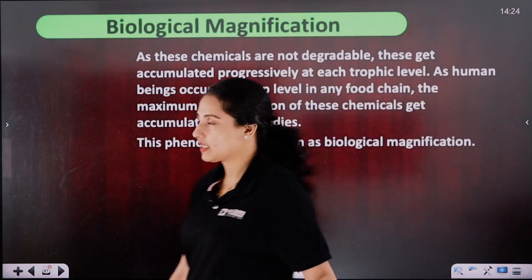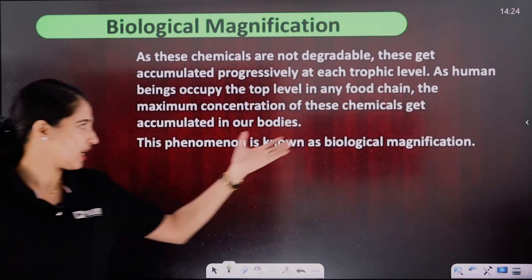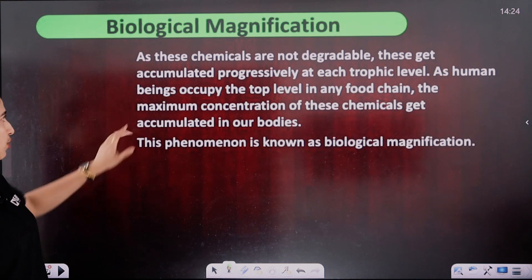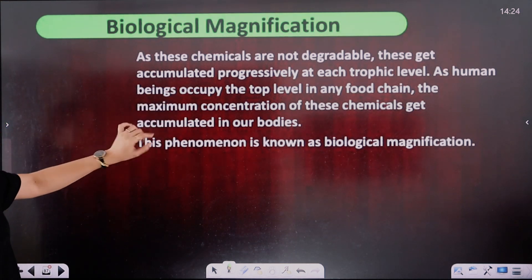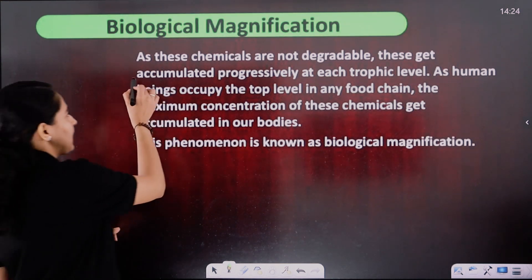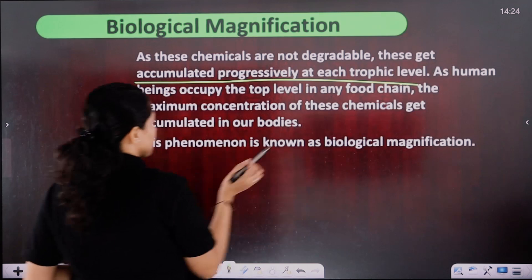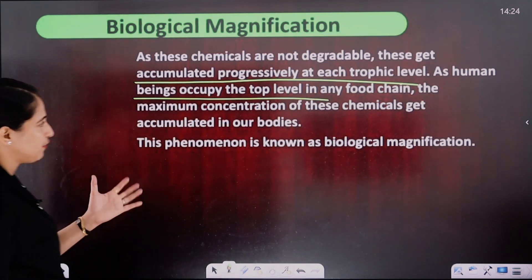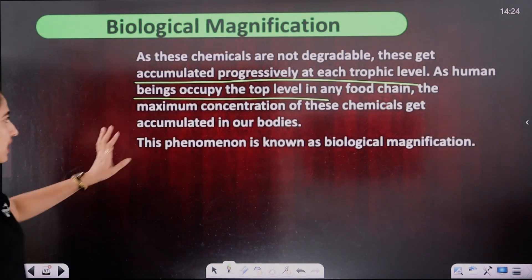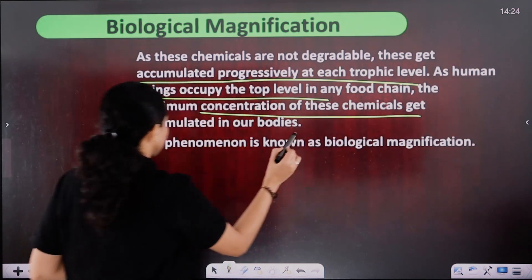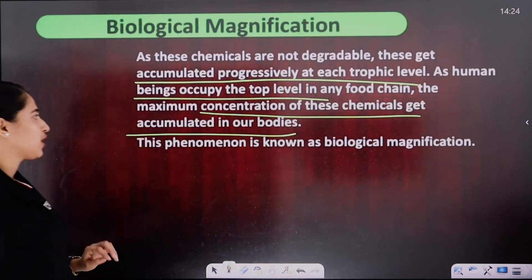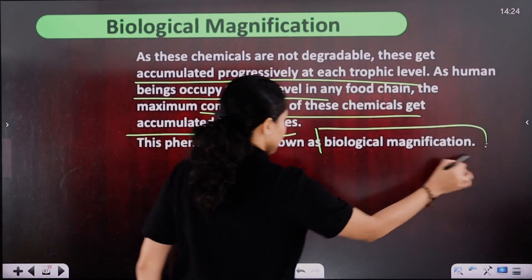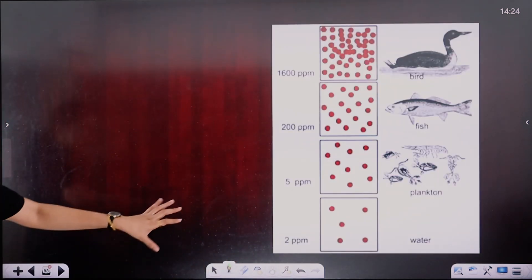One example: chemicals that are toxicant at a level are not degradable. These chemicals get accumulated progressively at each trophic level, and the maximum concentration of these chemical toxicants accumulates at the top level in a food chain.